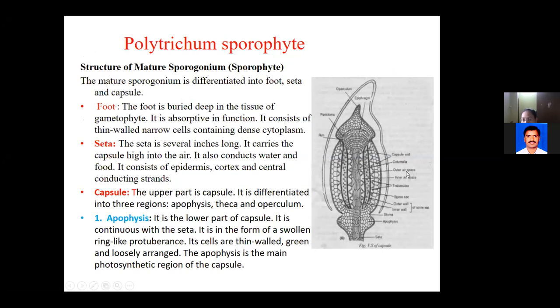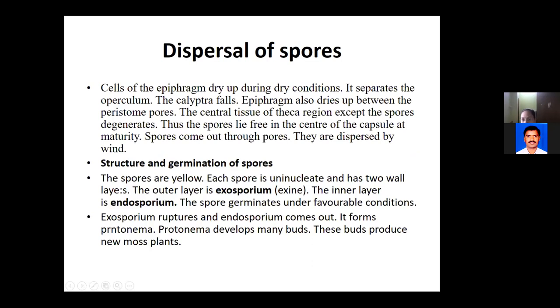Polytrichum is an advanced genus of the bryophytes, with a highly developed capsule. When spores are matured, dispersal occurs. The cells of the epiphragm - the peristomal teeth region - dry up, and due to that, the operculum separates. When it is dry, the operculum opens and the calyptra falls - the lid falls.